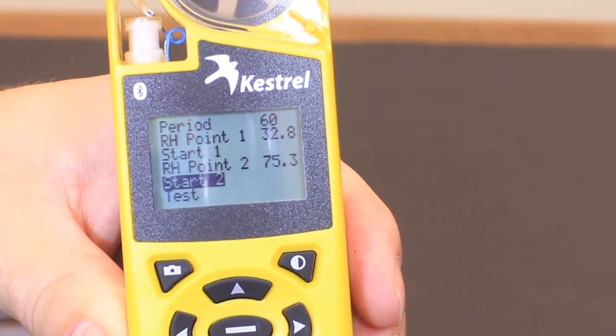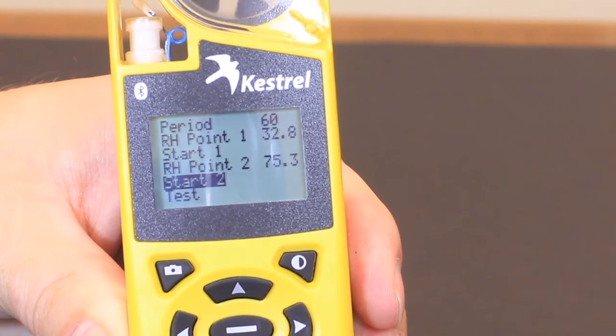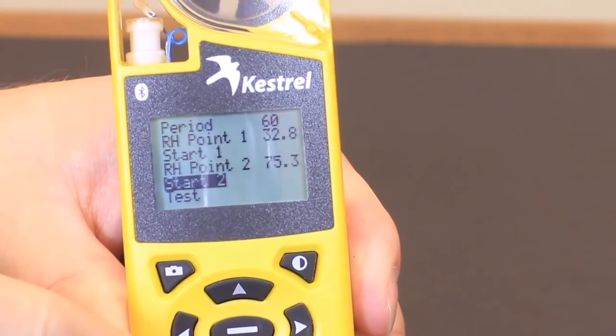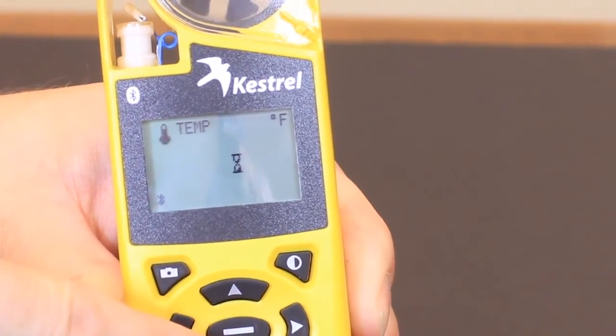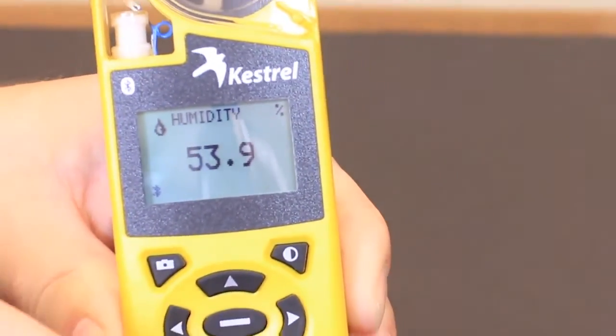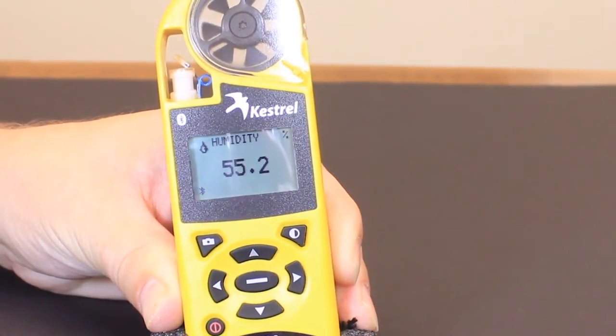Now we pulled it from the second calibration chamber. The humidity has been calibrated and we can hit the power button to get back to the main menu and notice that our humidity is now within spec again.